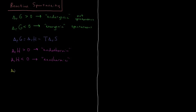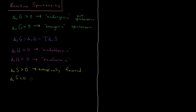In terms of the entropy, we want to produce entropy because producing entropy will lower our Gibbs energy, because of the minus sign in front of it. So if delta S is greater than zero, we say that it is entropically favored. And if your reaction entropy is less than zero, then we say that you are entropically disfavored.